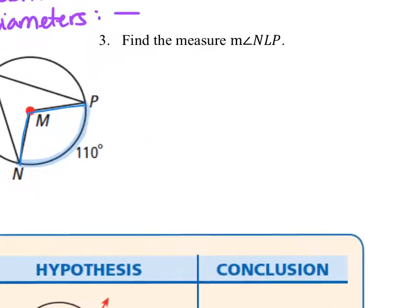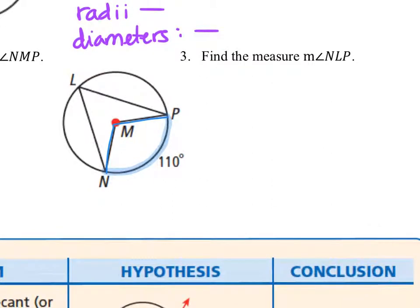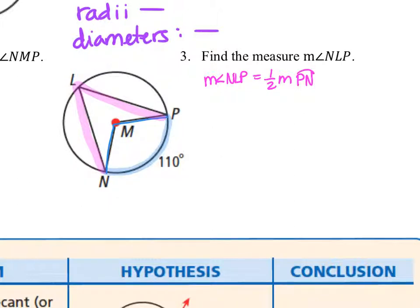We'll take a look at question number three, which uses the same diagram. This time we want to find the measure of angle NLP, which is not a central angle — it is an inscribed angle. The measure of angle NLP is one-half the measure of the intercepted arc NP, so it's one-half of 110 degrees, giving us 55 degrees.